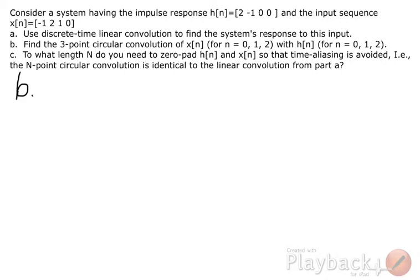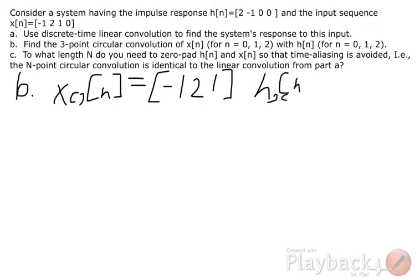Part B, we have to reformat our input response and our input sequence—I'm sorry, impulse response. For the three-point circular convolution, our x of n can remain the same, but we'll have to pad a zero back onto h of n and also time reverse it.